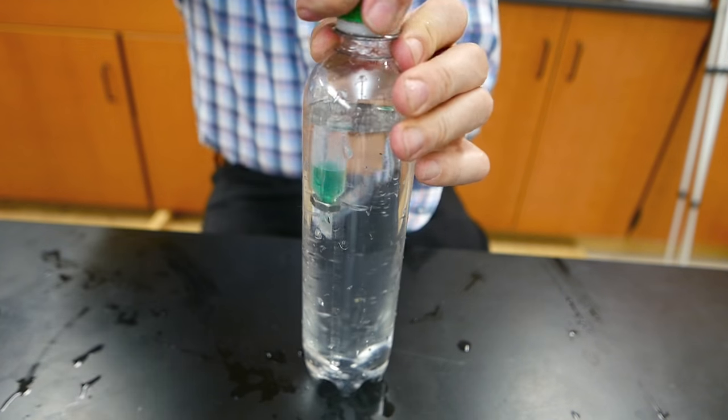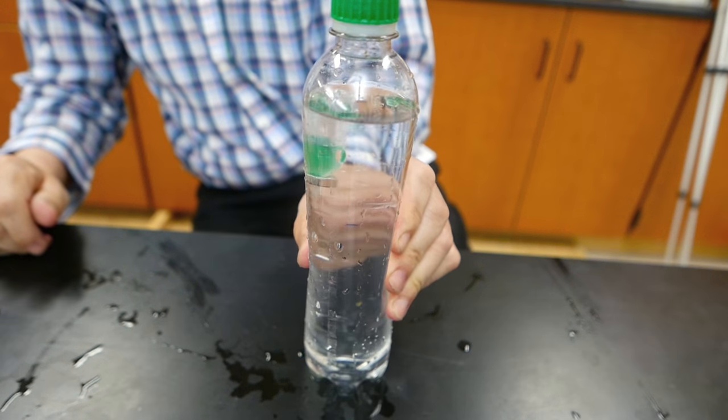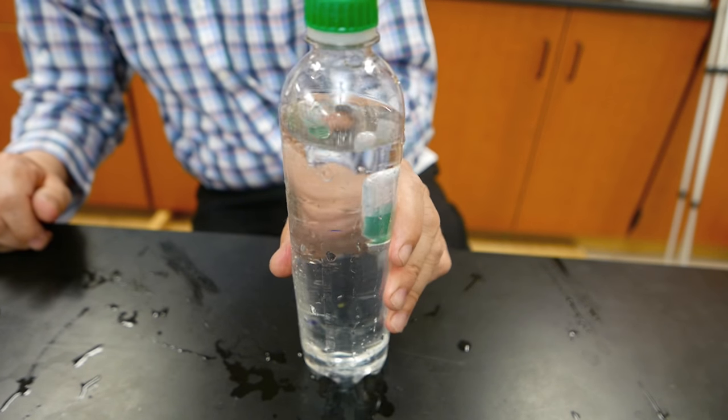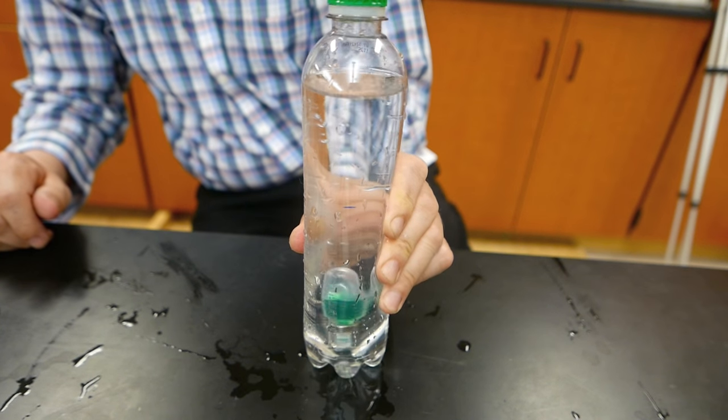Cap the bottle, give it a squeeze, and down it goes. In this case, no water actually goes into the dropper. The bulb simply compresses.